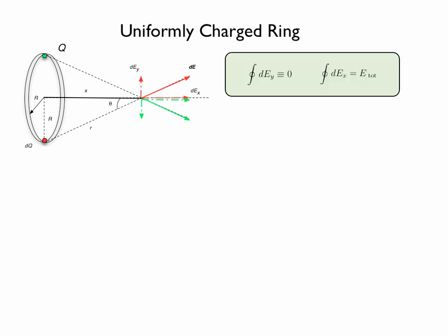After the integration the y components will cancel and only the x components will contribute to the electric field. So we can write that the total electric field due to the ring will be simply the integral over the x components of the electric field produced by each of those infinitely small elements along the ring.